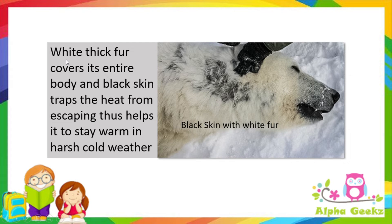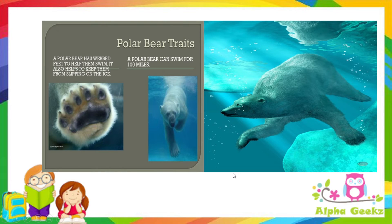Polar bears have white thick fur covering their entire body and black skin, which traps heat and prevents it from escaping, helping them stay warm in harsh cold weather. The white fur also helps them blend in with the snow and ice, protecting themselves from danger. Polar bears have large flat paws which act as snowshoes to help walk in the snow and avoid slipping on ice. These paws also act as paddles for swimming — polar bears can swim up to 100 miles.